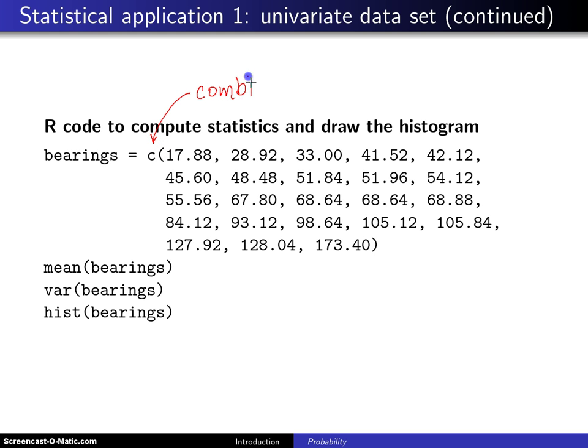This will put all 23 of those values into a vector, and then you call the mean function to calculate the sample mean, you call the var function to calculate the sample variance, and finally you call the hist function to draw a histogram.